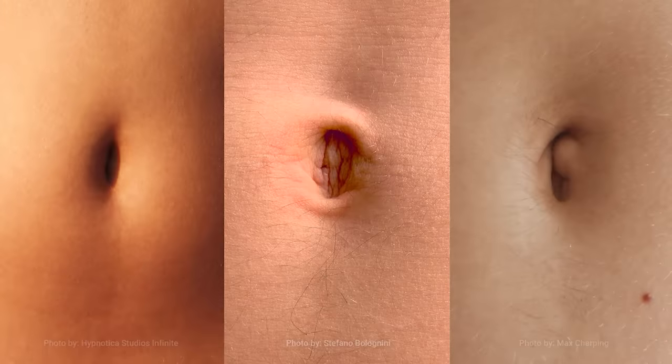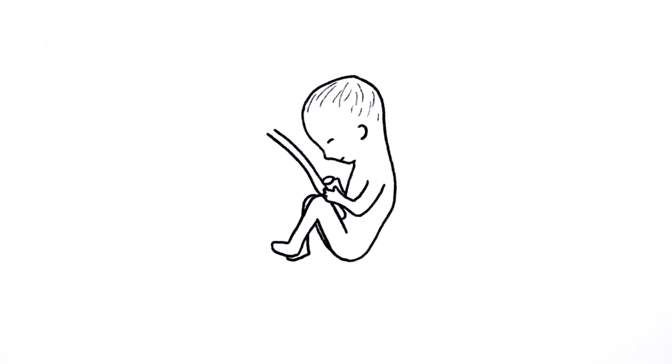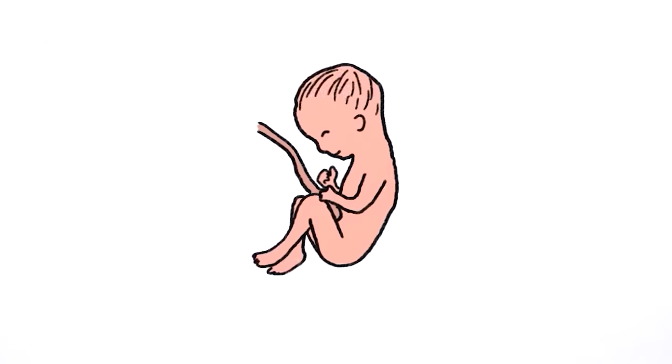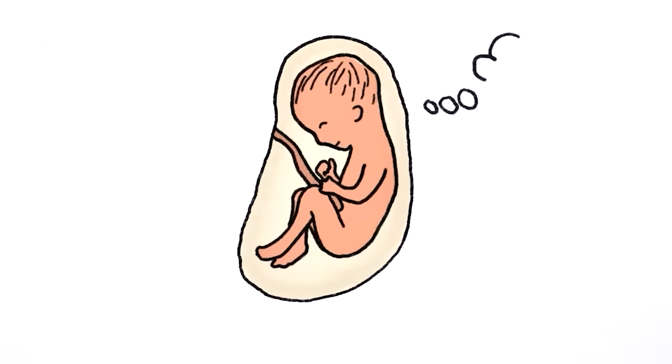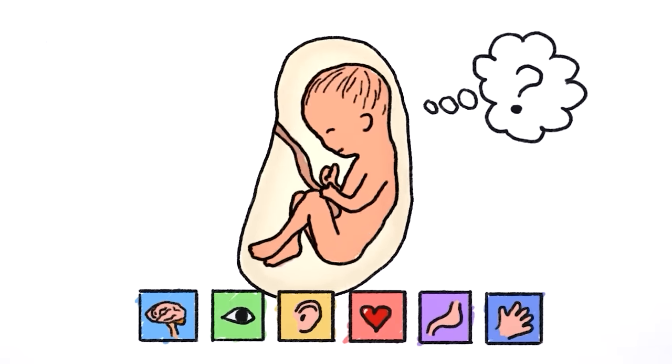The little scar in the middle of your abdomen marks the place where, for about nine glorious months, all the nutrients you needed to grow and develop and survive flowed straight into your bloodstream while you just floated around in a sack of amniotic fluid. But have you ever wondered what was going on with your other bodily functions while you were in that enclosed space?